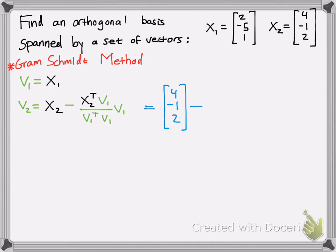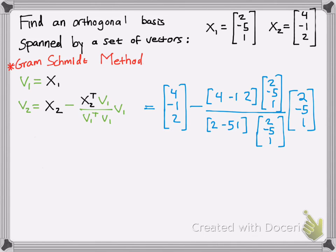Subtract the transpose of that. So all you do is make the column into a row. And then we multiply that by v1, which you define as x1. So we just write x1 there. Then we do v1 transpose, which is just the transpose of x1, and multiply that by v1, which is x1. And all that times v1 again.